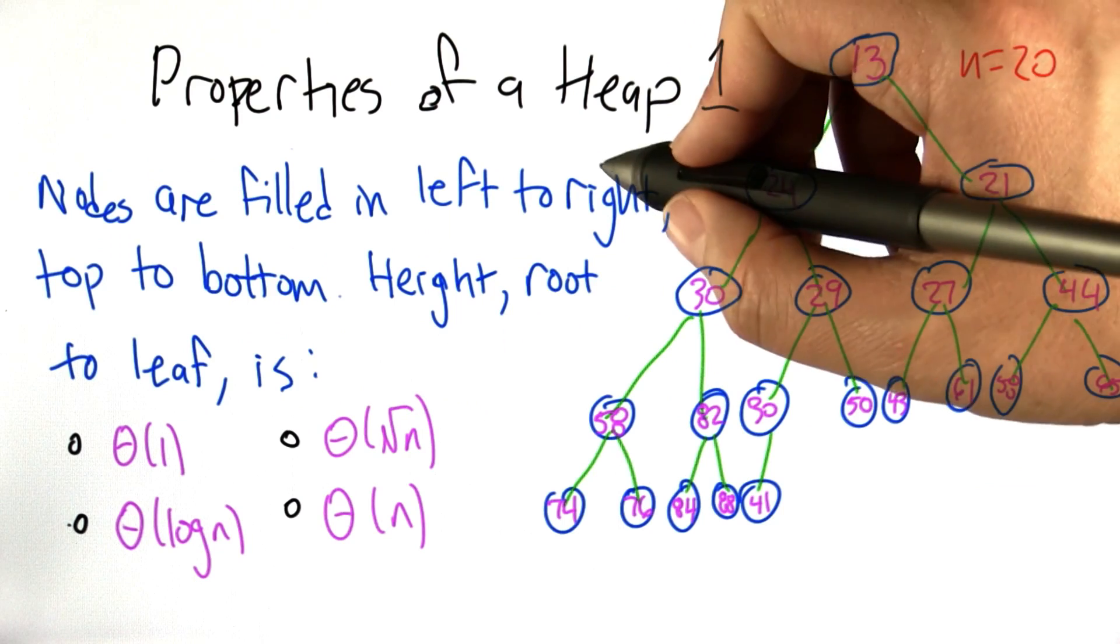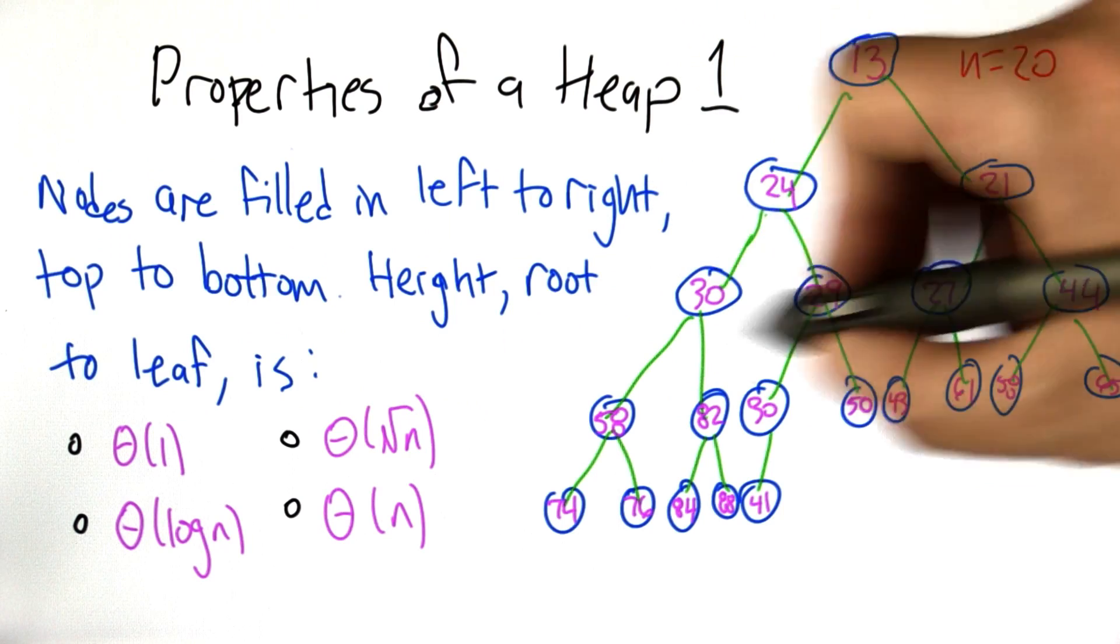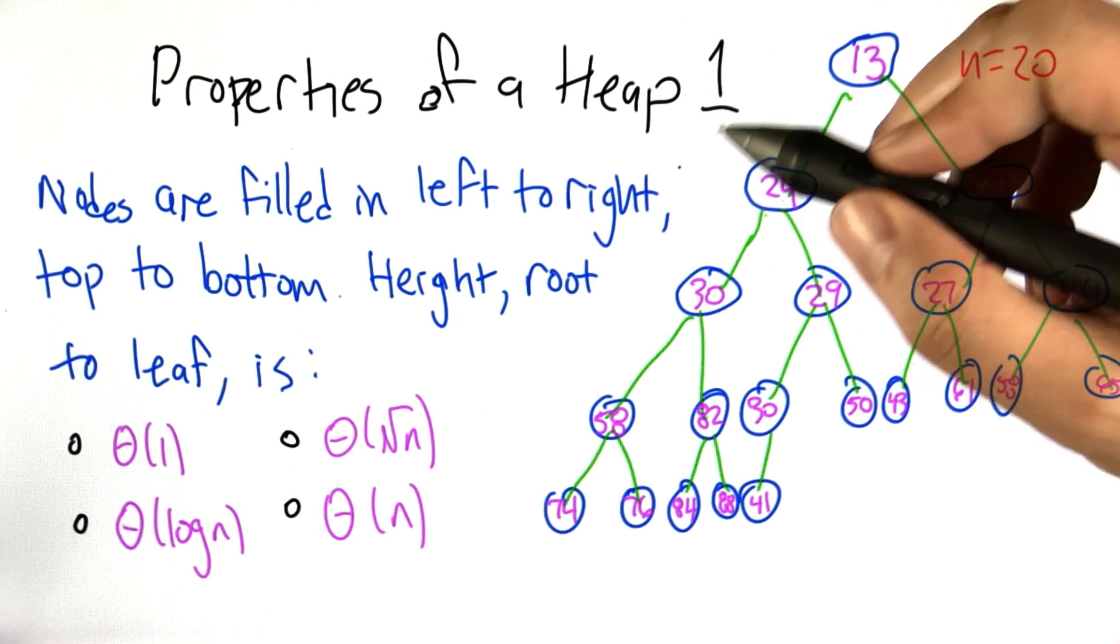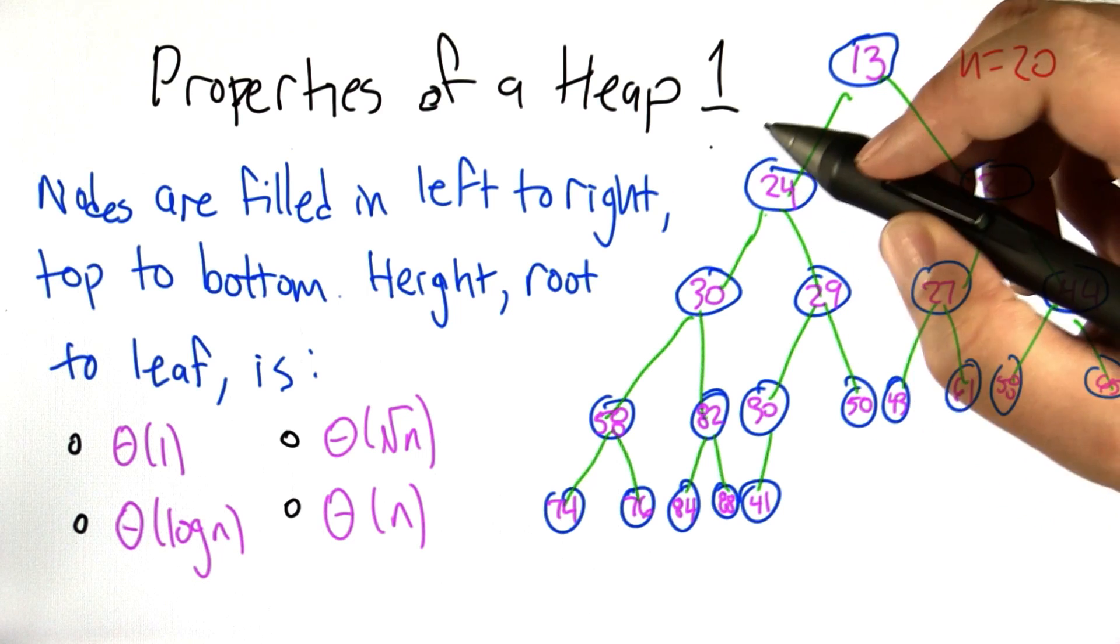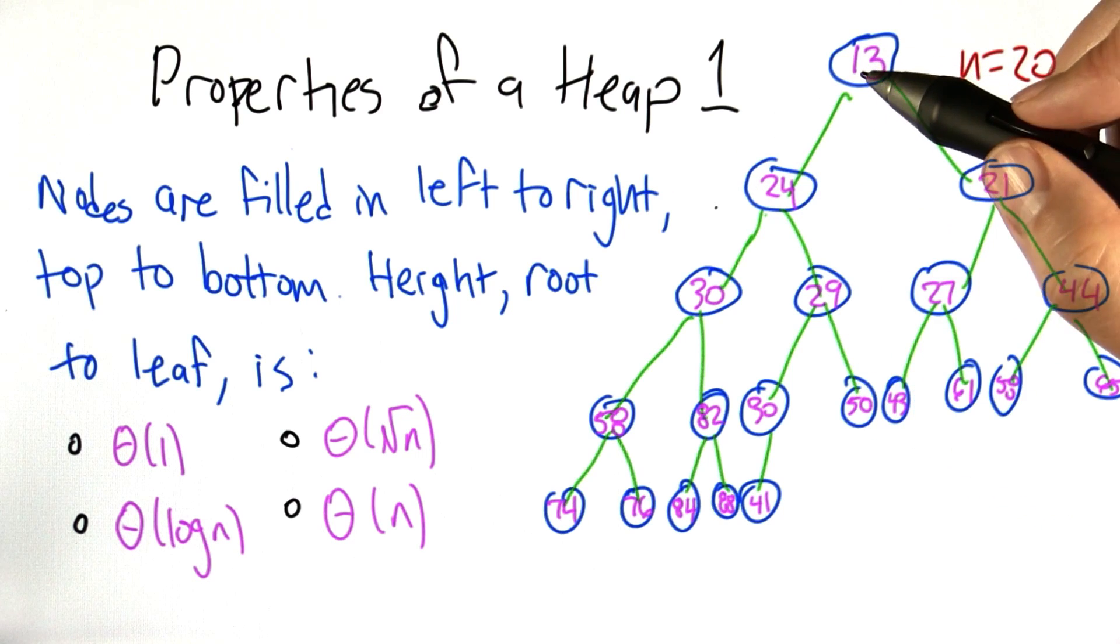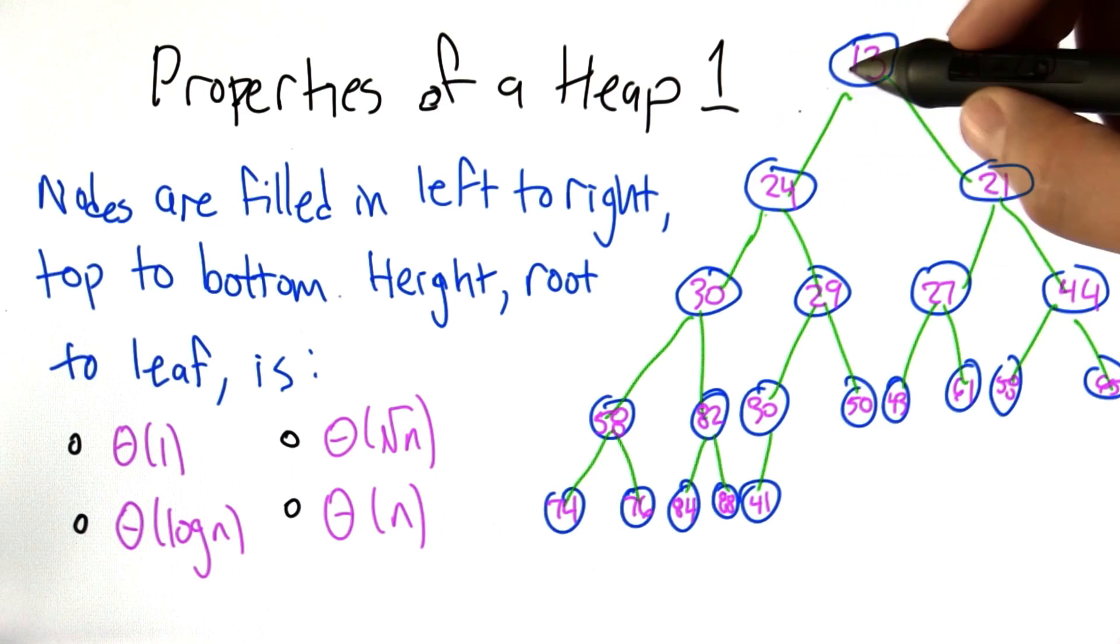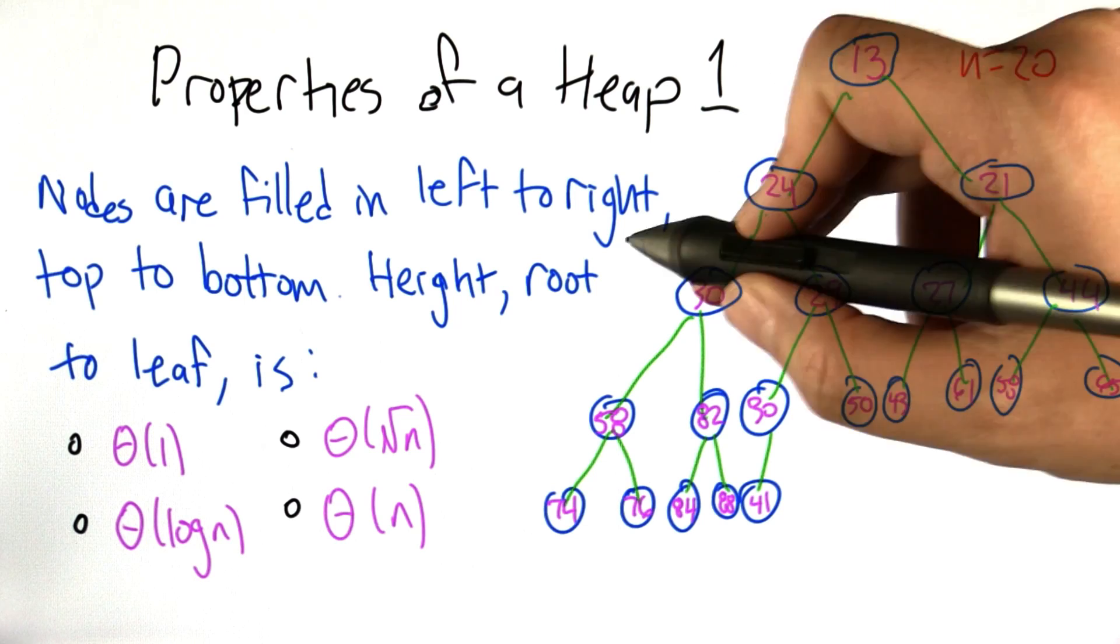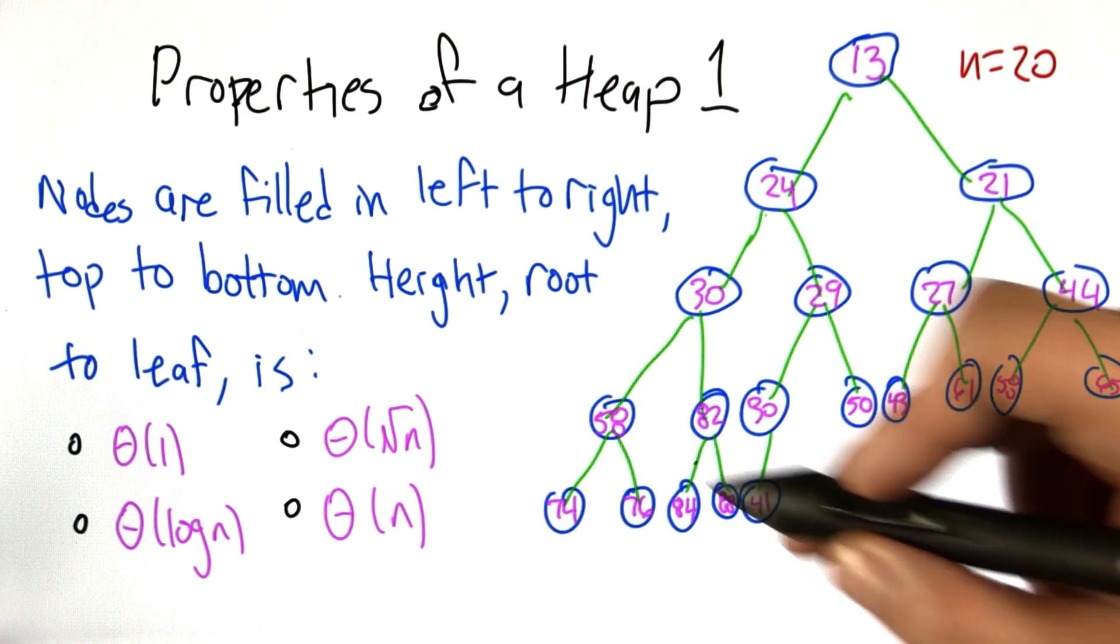So because of the properties of the way that heaps are defined, they have some higher level properties that are going to turn out to be really important when they're used in algorithms. So the way that we created nodes here is we filled them in left to right, top to bottom until we run out of nodes.